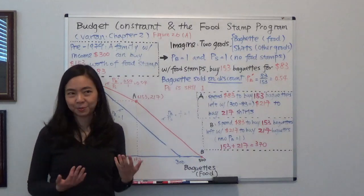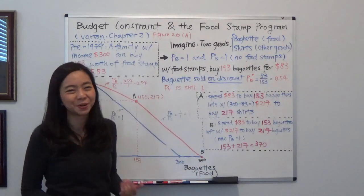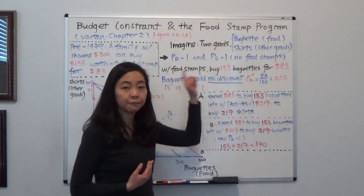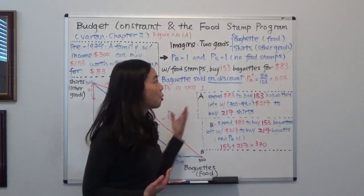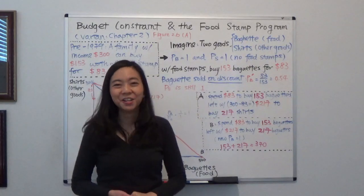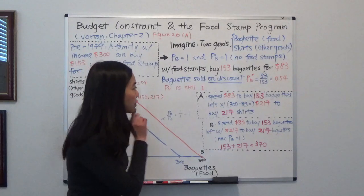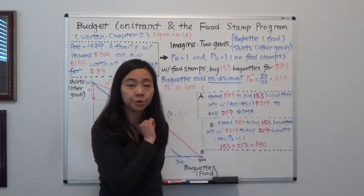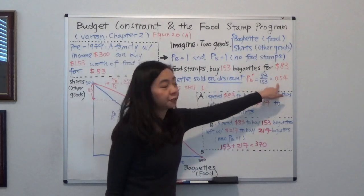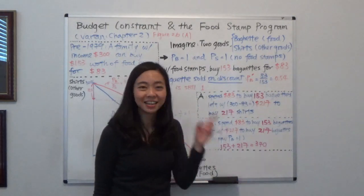And now with the government's new food stamp program, you can think of it as a baguette discount program. You are allowed to buy 153 baguettes at a discount, meaning you only have to pay $83 for these 153 baguettes. So what is the new price of the baguettes? Well, the new price will be $83 to buy 153 baguettes. So the new price of the baguette will be 54 cents.